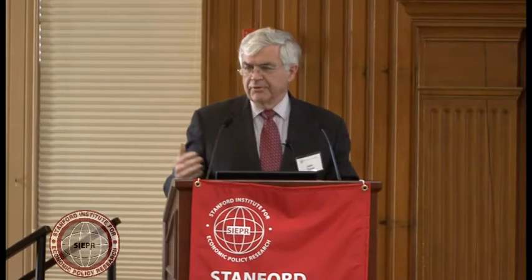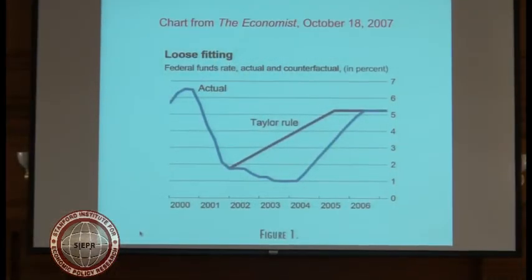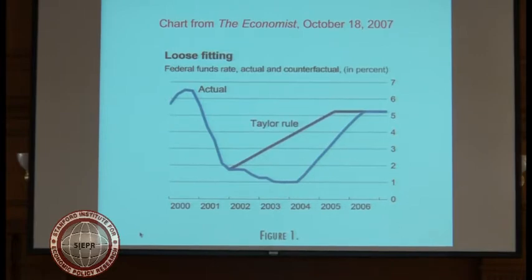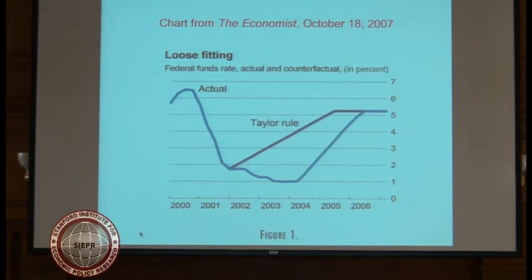There's a blue line which shows you the interest rate set by the Federal Reserve. The Federal Reserve generally sets interest rates as its operating procedure, and it focuses on the federal funds rate. The blue line, which is labeled 'actual' in the picture, is the federal funds rate. You can see it was at 6.5% in 2000, cut sharply during the recession in 2001, then drifted down to 1% in 2003, was held at 1% through most of 2004, and then was raised very gradually, reaching 5.25% in 2006.